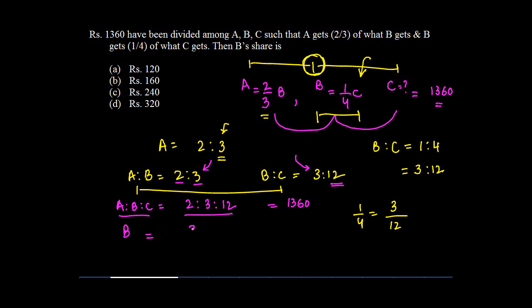B's share is obviously 3 divided by 2 plus 3 plus 12 into 1360. Or 3/17 into 1360. This is going to give you 240. Which is your answer.